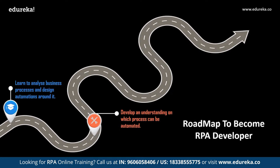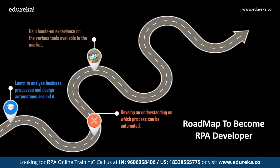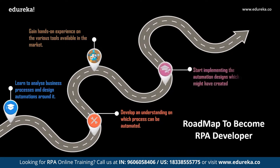Once you have a clear understanding of which processes can and cannot be automated, the next step is to get hands-on experience in the top available tools. It's not necessary to explore every tool — choose based on your comfort zone and which tool will benefit you most. After that, start implementing the automation solutions you've designed: bring them onto the tool, design the automation solution, and then test your automations.